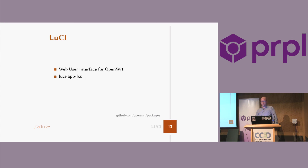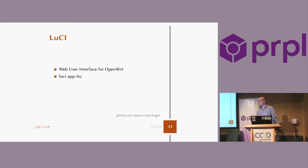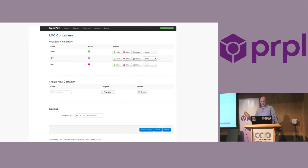Now we come to the last part, which is LuCI. Once we had all that done, it was really easy to do the frontend — it's not a simple frontend, but we had all the APIs exposed via UBUS, through which we could access it from LuCI. The package is called LuCI app LXC and can also be found in the packages feed. This is how it looks: you can create new containers, start, stop, delete containers, and do other stuff when you press the more button.